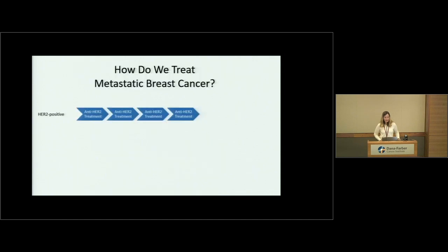Because of that data and subsequent work with drugs that target HER2, treatment for HER2-positive breast cancer is always focused on the HER2-ness of the cancer. Someone might start with trastuzumab and pertuzumab together with chemotherapy, and then the next treatment — once the cancer grows — would be another anti-HER2 therapy. We really focus on that HER2-ness of the cancer the whole time.